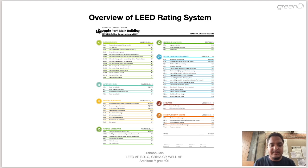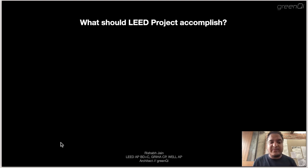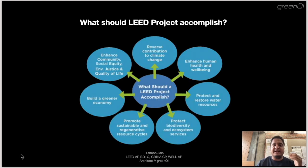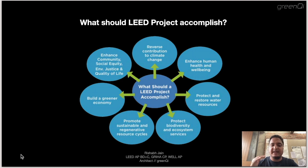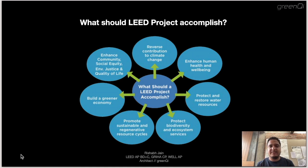In Energy and Atmosphere, Apple Park achieved a perfect 35 out of 35 points, which is quite remarkable. As per LEED Version 4, the primary aims of the rating system are to: reverse contribution to climate change while enhancing human health and well-being, protect and restore water resources, protect biodiversity and ecosystems, promote sustainability and regenerative resource cycles, build a greener economy, and enhance community and social equality.